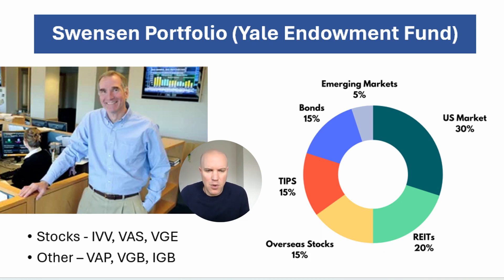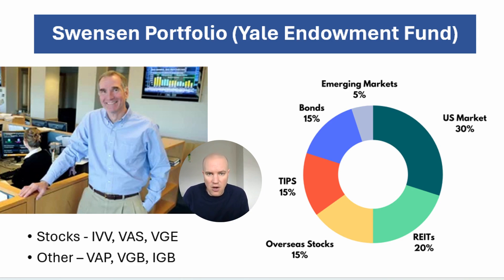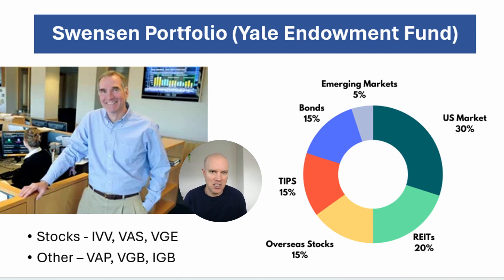The Yale Endowment Fund is an investment portfolio that was run by the late David Swensen when he was chief investment officer there. This portfolio got a lot of attention because it had been performing well for a very long time, attributed to David Swensen's investment philosophy. It was a good mix of stocks both locally and abroad. As an Australian trading on the ASX, I would consider the US market equivalent to be IVV (S&P 500), REITs via VAP, and overseas stocks as VAS for local Australian shares, with TIPs and bonds as well. I find this a really strong portfolio because of the great balance of stocks, property and bonds — irrespective of market conditions, you'll have a reasonable return.